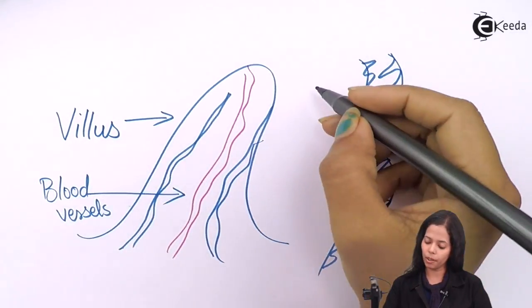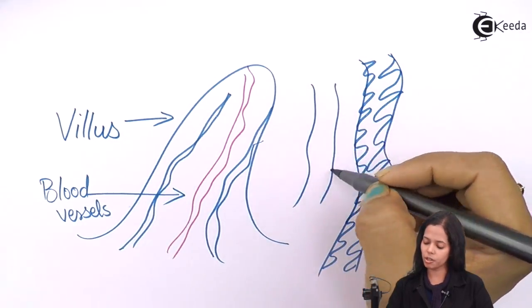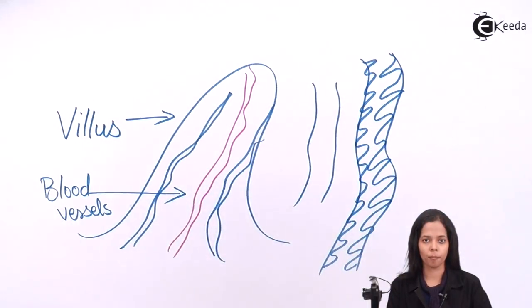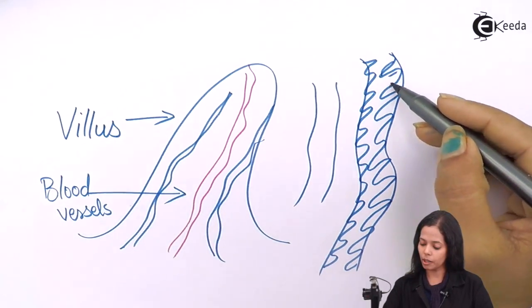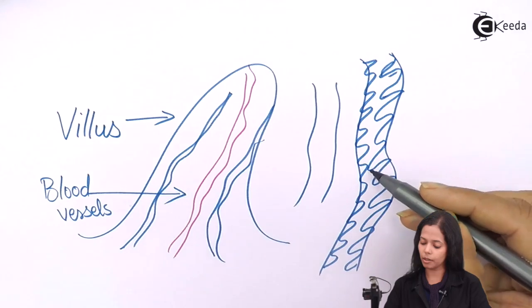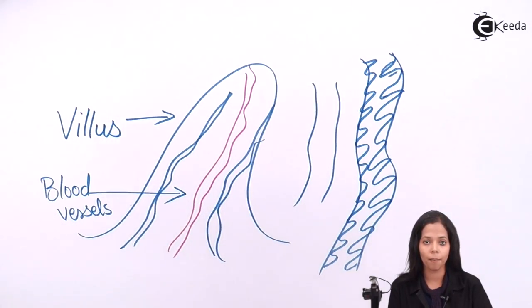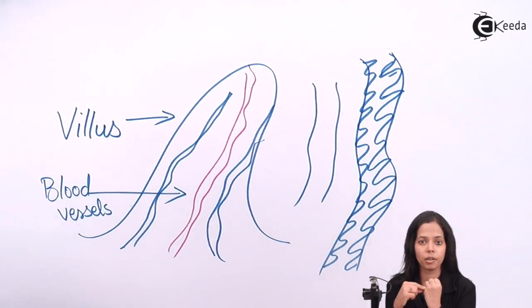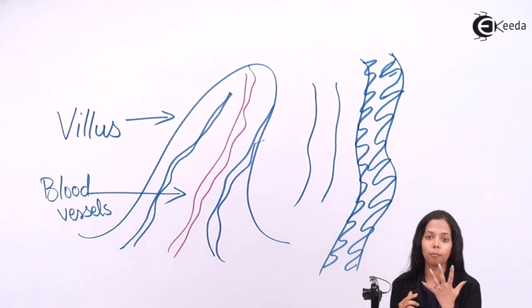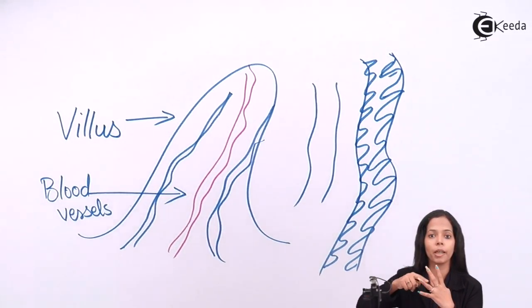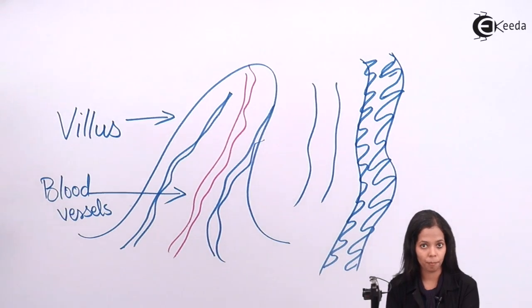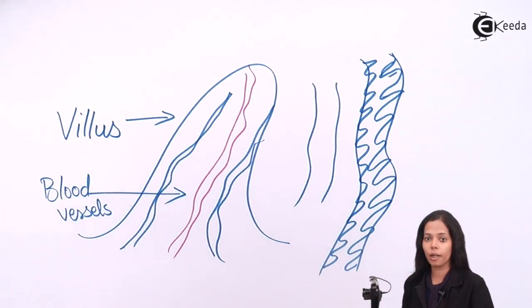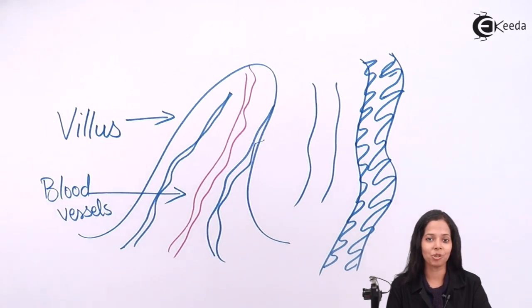When it is simply a tubular structure, it has only this much surface area for absorption. But when the structure is increased like this with finger-like projections, it increases the surface area. Compared to your hand, when your hand is without fingers it has only this much surface area, but if there are finger-like projections present, the surface area for absorption increases. The presence of villi increases the surface area for absorption of nutrients.